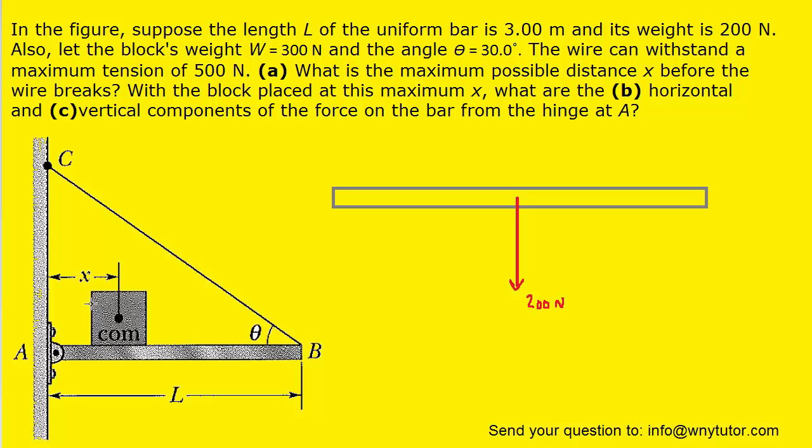Looking back at the picture, we have this block that's resting on the bar, and so the weight of that block will be pressing down on the bar. That will serve as a second force acting downward on the bar, and the question notes that the block's weight is 300 newtons, so we can label that force as well.